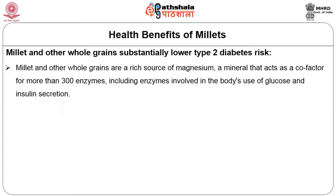Millet and other whole grains are a rich source of magnesium, a mineral that acts as a cofactor for more than 300 enzymes, including enzymes involved in the body's use of glucose and insulin secretion. Unless the glucose taken in from food — which gets broken down finally to glucose — is absorbed in the bloodstream and oxidized and used by the different cells, extra glucose will get deposited in the liver, get reconverted to fat and stored. If it is too much, blood levels will increase and it will also spill into the urine leading to glycosuria, which is exhibited as diabetes.